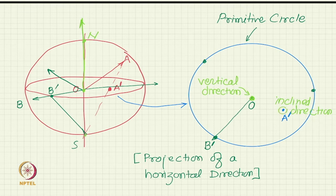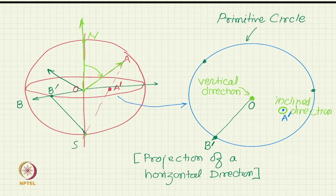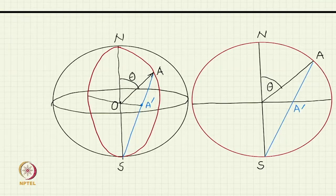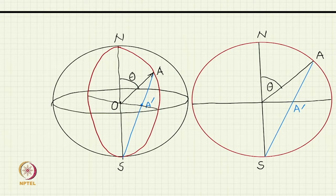Suppose I know the projection point a prime. Can I determine the angle theta — the angle of inclination of direction OA with the vertical? That is a nice geometric exercise. We have the direction OA; we project it by joining point a, where the direction hits the sphere, with S. So joining SA, it gets projected into a prime.